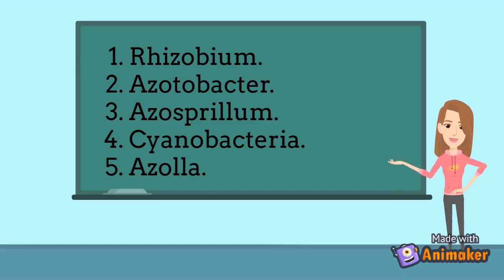Second is Azotobacter. It is a free-living nitrogen-fixing aerobic bacteria that infects non-leguminous plants. Its proliferation is affected by the low amount of organic matter present in soil.